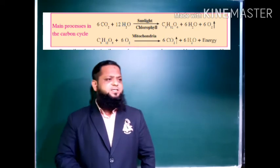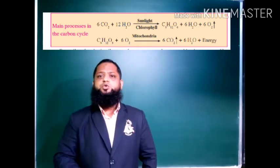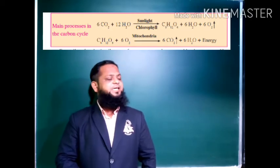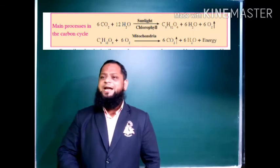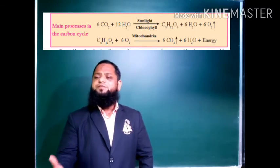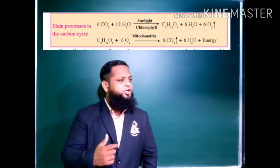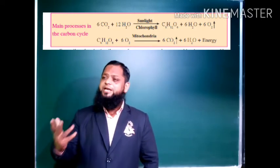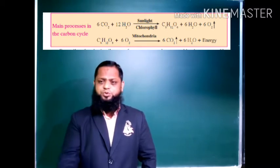Glucose is further reacted with 6 molecules of oxygen inside the mitochondria and gets converted into 6 molecules of carbon dioxide, 6 molecules of water, and energy is released during this process.